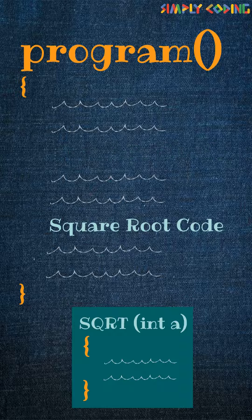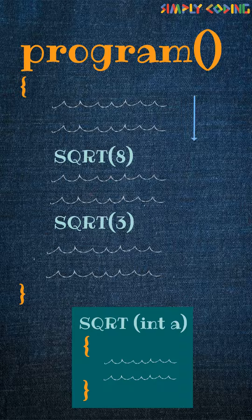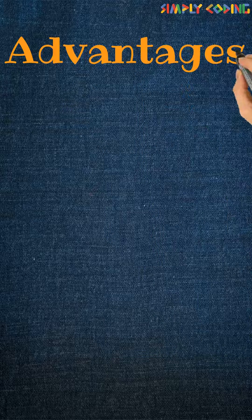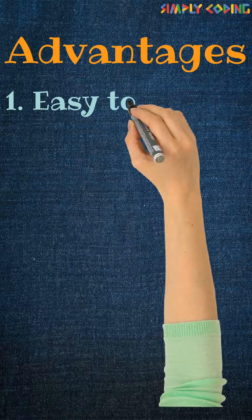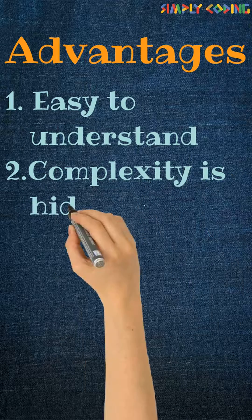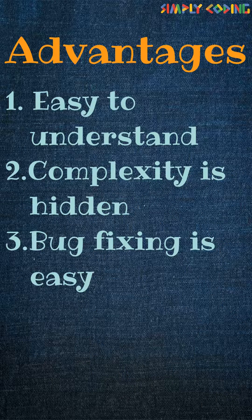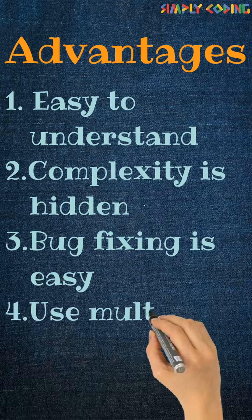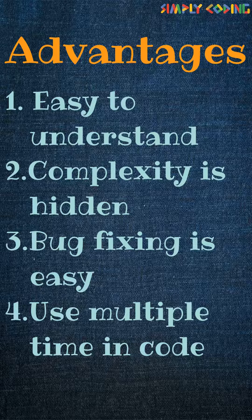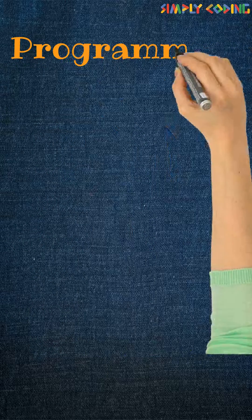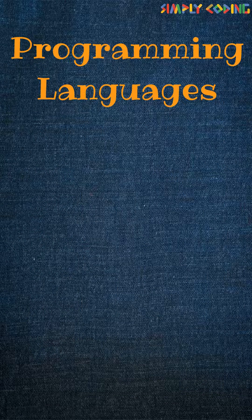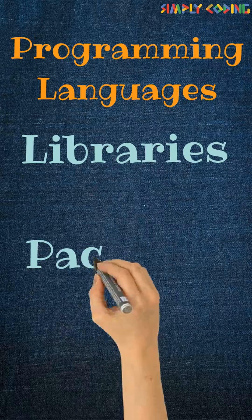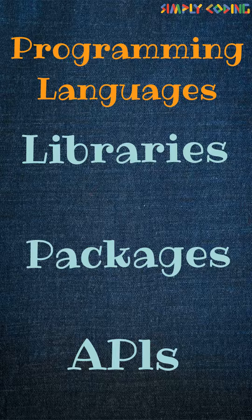You can call it multiple times in your code. When your code is executing, it encounters this method, executes that block of code, and then comes back to your code. The advantages of using methods are that your program becomes easy to understand as the complexity is hidden, bug fixing is easy as the program is better structured, and you can use the function wherever you need it. In fact, many programming languages bundle commonly used functions in libraries, packages, or APIs, which can be quickly utilized by programmers without worrying about the details.